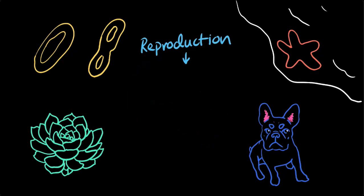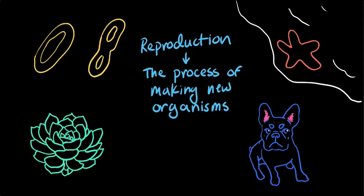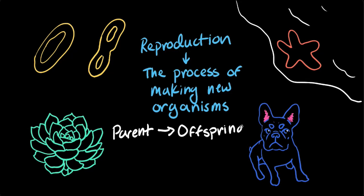But what exactly is reproduction? Reproduction is the process of making new organisms. This happens when parent organisms reproduce to form offspring. During reproduction, organisms pass their genetic information on to their offspring. This genetic information provides blueprints for how the offspring will grow and develop, and is how traits get passed on from one generation to the next.